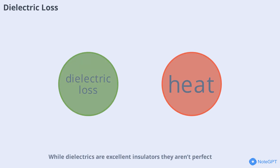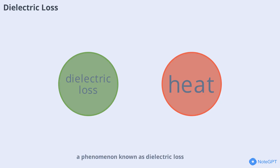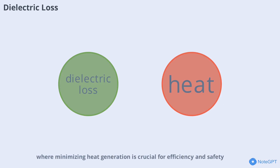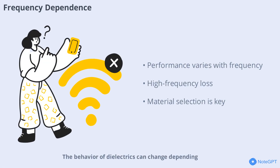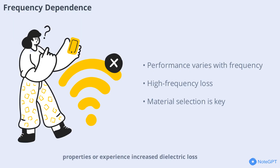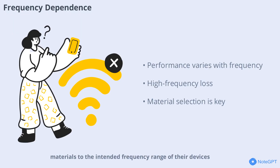While dielectrics are excellent insulators, they aren't perfect. Some energy is always lost as heat when an alternating electric field is applied, a phenomenon known as dielectric loss. This loss is especially important in high-frequency applications like radio transmitters and microwave ovens, where minimizing heat generation is crucial for efficiency and safety. The behavior of dielectrics can change depending on the frequency of the applied electric field. At low frequencies most dielectrics perform well, but at higher frequencies some materials may lose their insulating properties or experience increased dielectric loss. This is why engineers must carefully match dielectric materials to the intended frequency range of their devices.